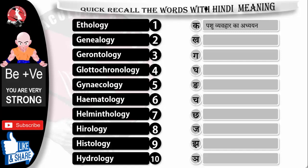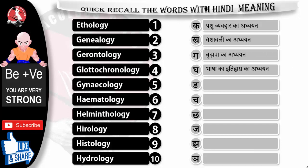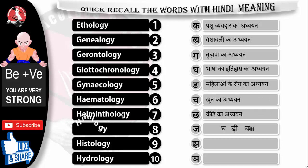Ethology — Pasuvyavhar ka Adhyan. Genealogy — Vansawali ka Adhyan. Gerontology — Budhaapa ka Adhyan. Glottochronology — Bhasha ke Itihas ka Adhyan. Gynecology — Mahilao ki Rogo ka Adhyan. Hematology — Khoon ka Adhyan. Helminthology — Kido ka Adhyan. Horology — Ghadi banane ka Adhyan. Histology — Paudho ke Uttakon ka Adhyan. And last one — Hydrology — Paani ka Adhyan.